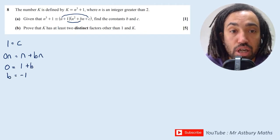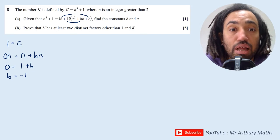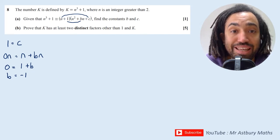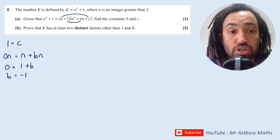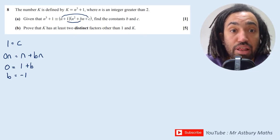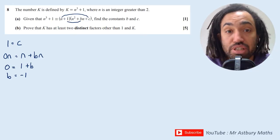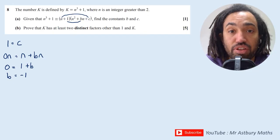Okay great, so that's the first part done. Part b asks us to prove that k has at least two distinct factors other than 1 and k, and I'm going to use a proof by contradiction here.